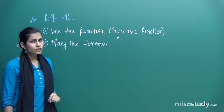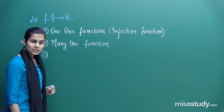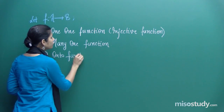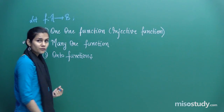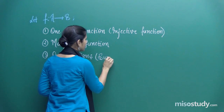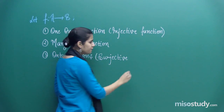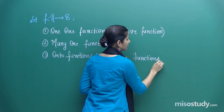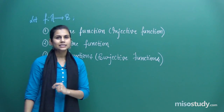Talking about the other two categories, the third classification is onto functions. These onto functions, just like the one-one function, have another name — they are called surjective functions. Either you say onto or you say surjective functions; it means the same thing.